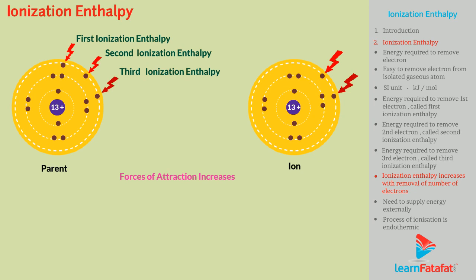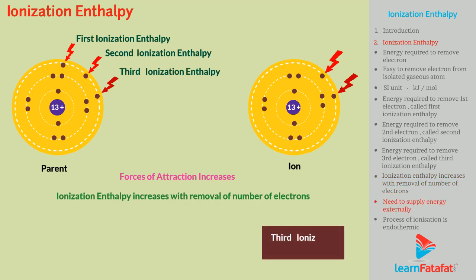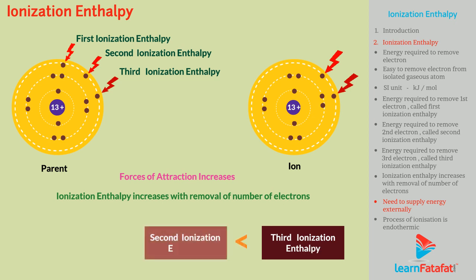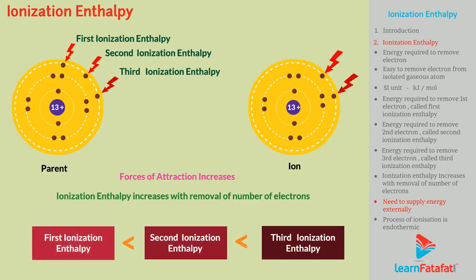Hence, to remove the second electron, more energy is required than that needed for its previous electron. Even more energy is needed to remove the third electron. In short, ionization enthalpy increases with the removal of successive electrons. That is, third ionization enthalpy is greater than second ionization enthalpy, which is greater than the first ionization enthalpy, and so on.